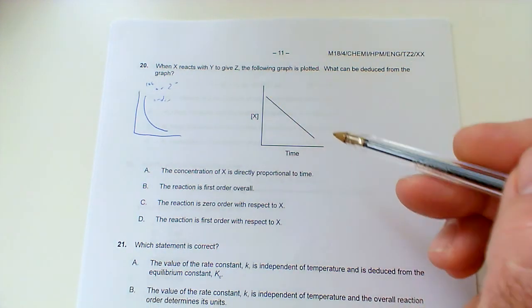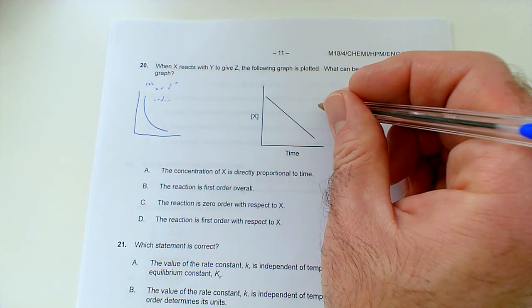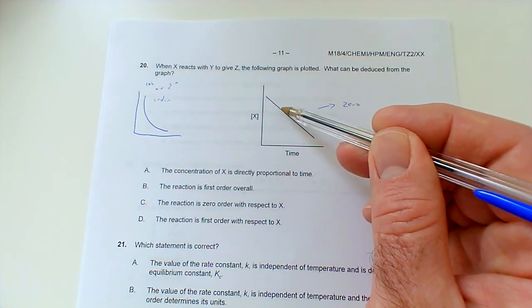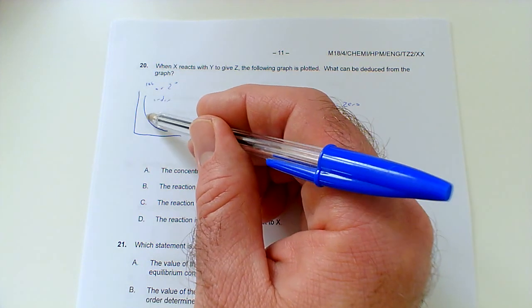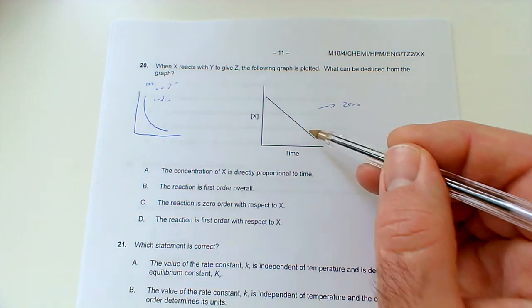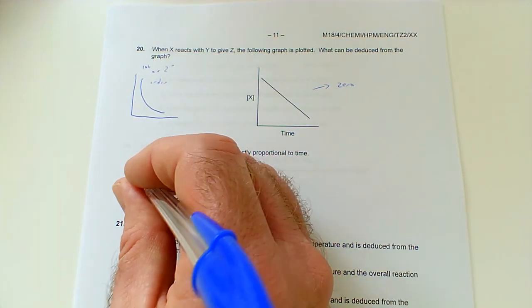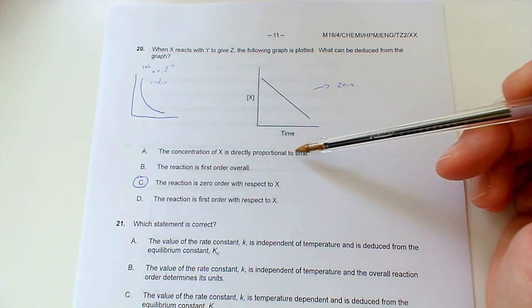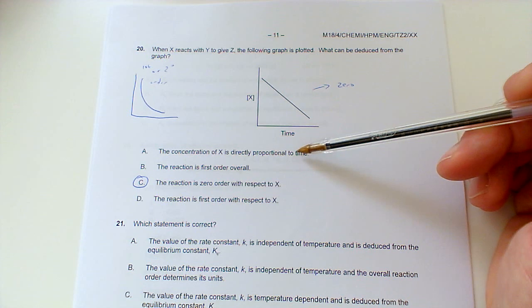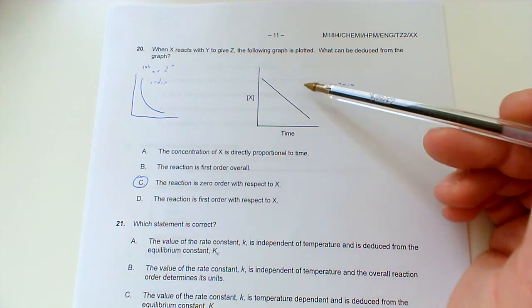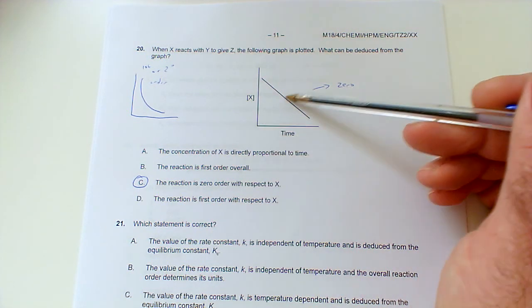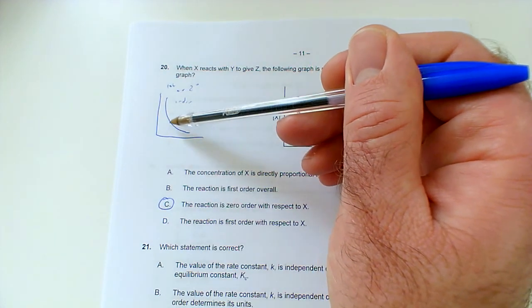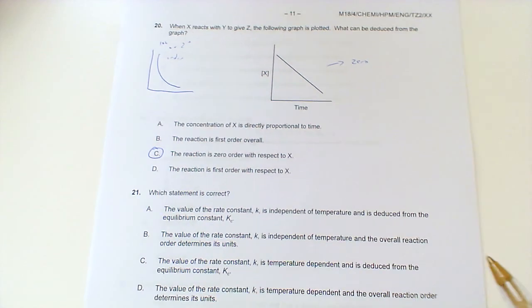You just really want to know that. So this is zero order. As the concentration decreases, it actually has no effect on the time, and that's why there's none of this kind of inversely proportional business. So it's going to be this one. If it was directly proportional to time, you'd get a relationship going like that. If it was first order with respect to X, you'd get a curve going like that, and the curve would have a constant half-life. So we'll go with C.